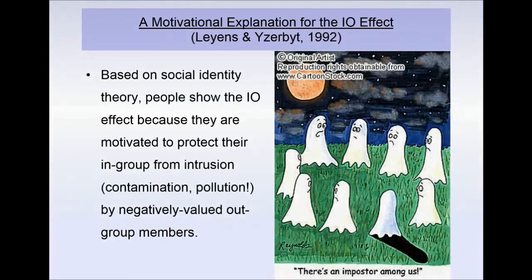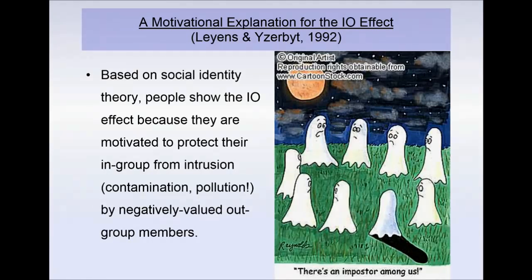So why are people doing this? Leyens and Yzerbyt came up with a solution based on social identity theory. They argued there is a motivational explanation: people are motivated to protect their in-group from intrusion, contamination, or pollution by negatively valued out-group members, in order to protect the positivity of their associated social identity and self-esteem. If those out-group members get into your in-group, they'll sully your group with their negativity. Since part of your self-esteem is derived from belonging to a positive in-group, you're motivated to exclude anyone who shows even a hint of being an out-group member.